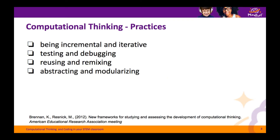Brennan and Resnick also identified different computational thinking practices — things that coders and programmers do when they are solving computational problems. Being incremental and iterative involves working step by step, building and imagining. When we want to write a program, we shouldn't just write the entire thing and then test it. It's much easier to write a successful program if we do it in small steps: first write one part of the code and make sure that works, then once it's working, add on to it. We might also imagine new ways of doing things along the way and go back and change our code.